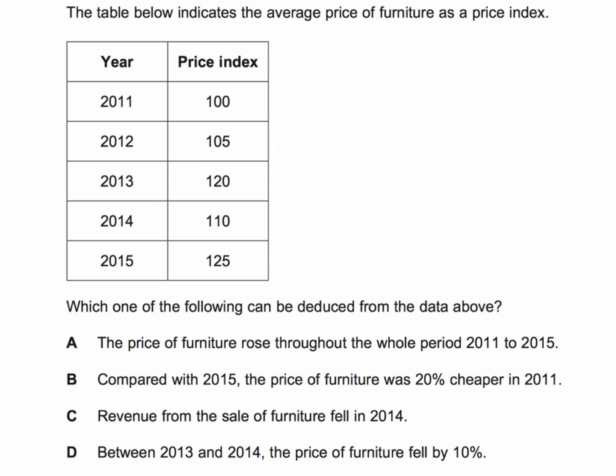The table below indicates the average price of furniture as a price index — not measured in pounds, dollars, or euros, but expressed as a price index. In 2011 the index is 100; we can assume that's the base year for the index. A base year price index nearly always is 100. You get some data for the four following years through to 2015.